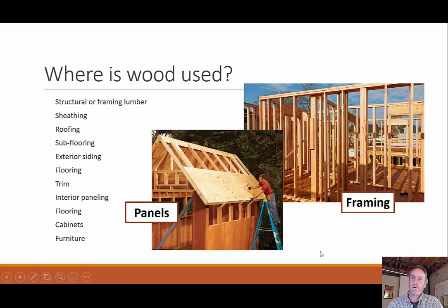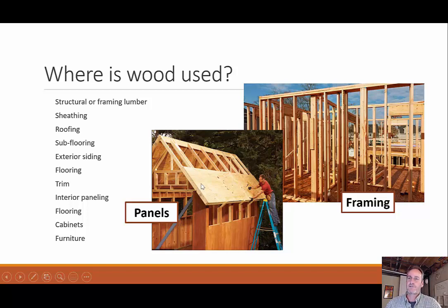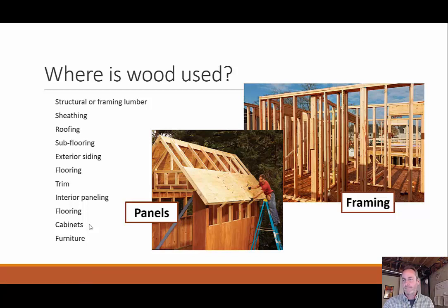Let's talk about wood in general — where do we see it in construction? We see it all over the place in residential construction, quite a bit in commercial but not as much. We see structural members like columns, posts, studs, and headers above doorways. We have plywood sheeting on top of rafters, sub-flooring, exterior siding, flooring — hardwood or any kind — interior trim, interior paneling, cabinets, and furniture. Wood is very common throughout.